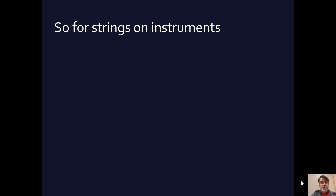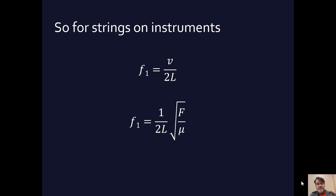For strings on instruments, the fundamental frequency of a string is going to be the velocity divided by twice the length of that string. If we substitute in for velocity the equation from a previous section — velocity equals the square root of the tension force divided by mu, the linear mass density characteristic of the string — then the fundamental frequency equals one over twice the length times the square root of tension divided by mu. So there you have a little bit on the dynamics of string instruments, as we finish out this chapter in Young and Friedman's University Physics.